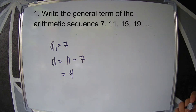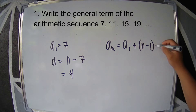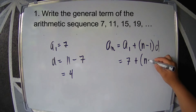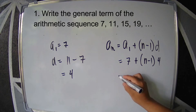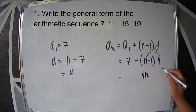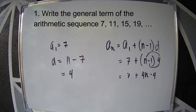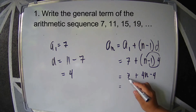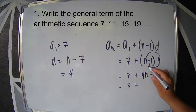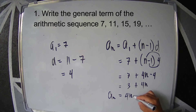Next, substitute the values into the formula: a sub n equals a sub 1 plus the quantity n minus 1 times D. So a sub n equals 7 plus the quantity n minus 1 times 4. Distribute 4: 4 times n is 4n, 4 times negative 1 is negative 4. Then add the constants 7 and negative 4, giving 3. So the nth term of the sequence is 4n plus 3.